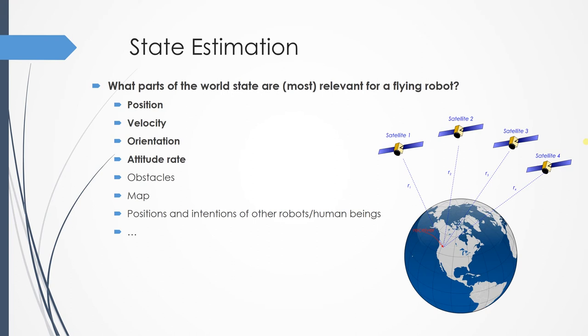For a robot, typically, we equip it with a set of sensors, and all these aim to infer the information we care about. Typically, we care for position, velocity, orientation, and attitude rate. For advanced applications, we also care for obstacles, the overall map, and so on and so forth.